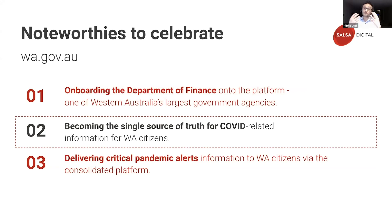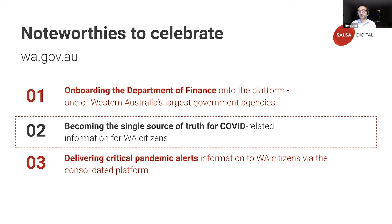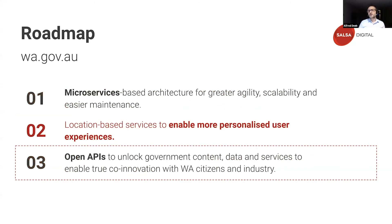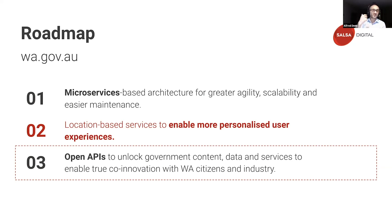A key celebration for Western Australia is that wa.gov.au was the single source of truth for COVID-related information for WA citizens — a big milestone removing any confusion about where to find the most relevant and credible information during COVID. A noteworthy roadmap item is open APIs, which will enable the Western Australian government to unlock government content, data, and services to enable true co-creation and co-innovation with citizens and industry.